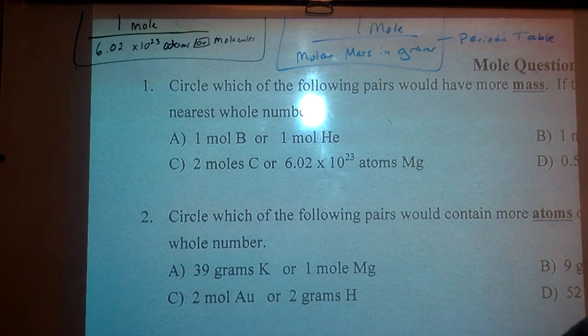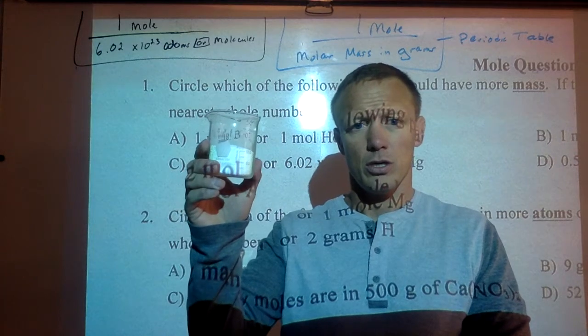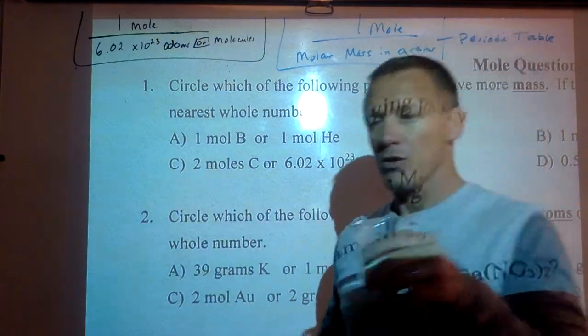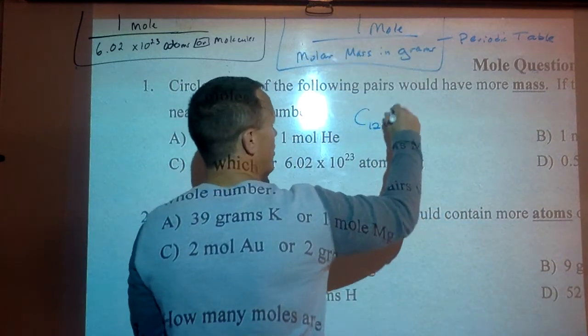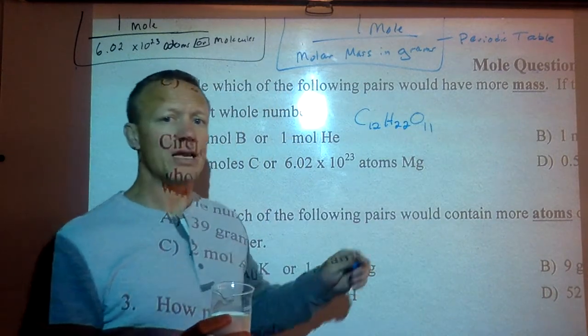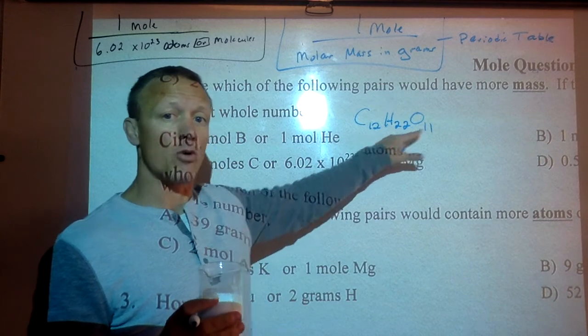For example, a mole of sugar is a mole of molecules, meaning you have a mole of C12H22O11. You have a mole of those molecules, and each of those molecules has a bunch of atoms in it. So you can have a mole of molecules,